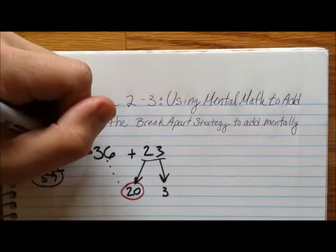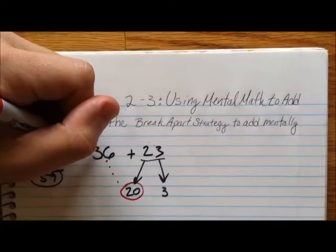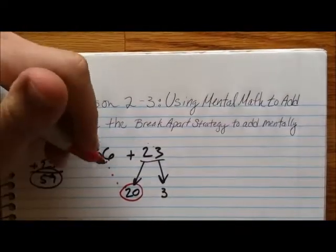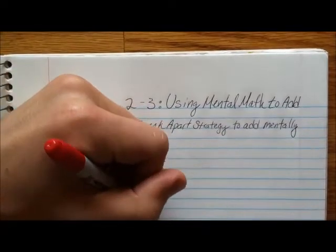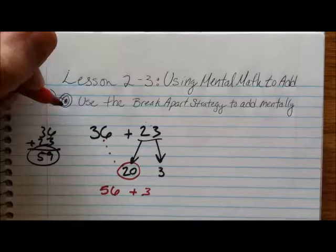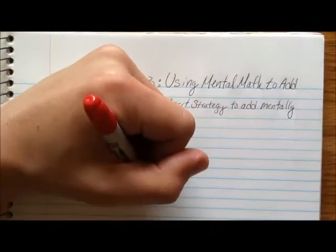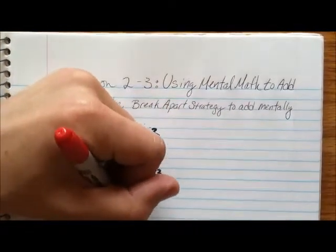What that looks like is we go 20 plus 36. So 36, 46, 56. So now we end up with 56 and we've still got a plus the 3 in there. So 56 plus 3, that's equal to 59.